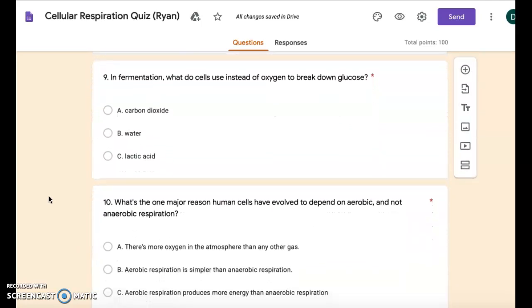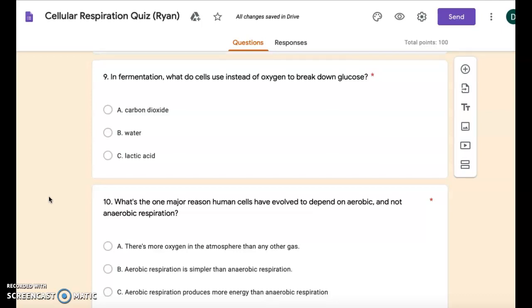Number nine: In fermentation, what do cells use instead of oxygen to break down glucose? A: carbon dioxide. B: water. C: lactic acid.